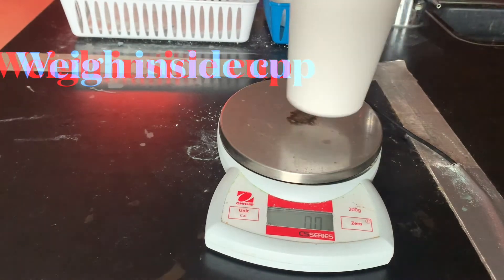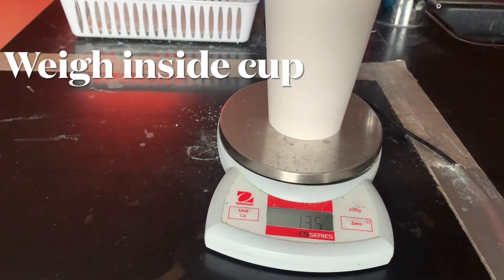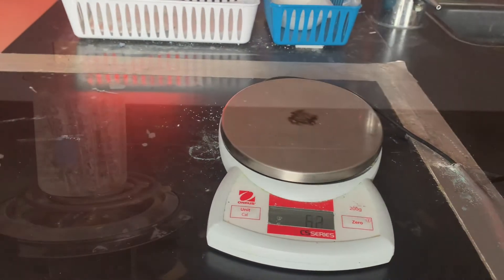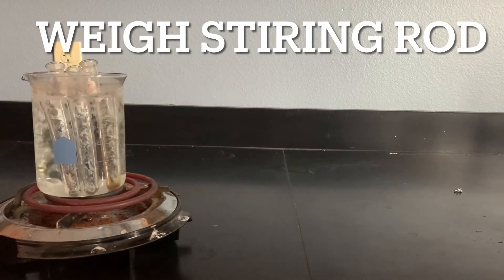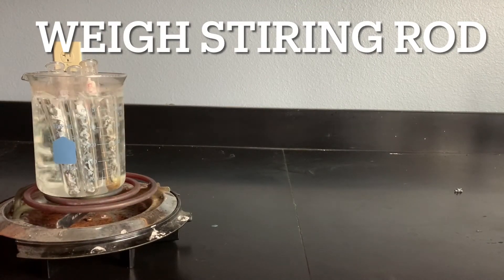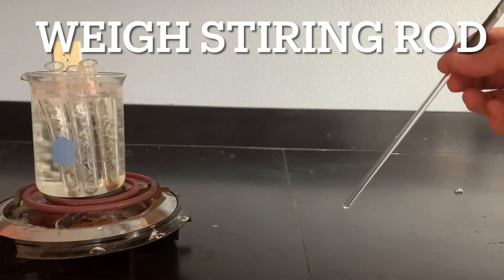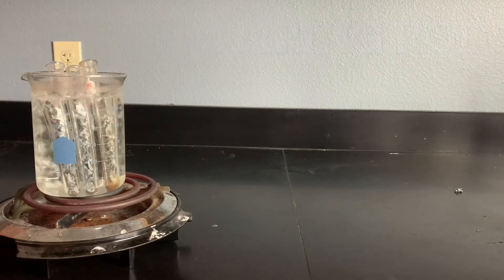Step one, we're going to weigh our cup and record the mass, and that's our inside cup for the calorimeter. I also want you to weigh your stirring rod because that is also going to be involved in the energy transfer, and then we want to set up your calorimeter.